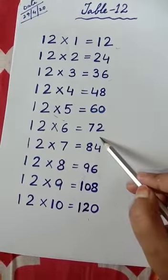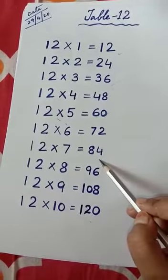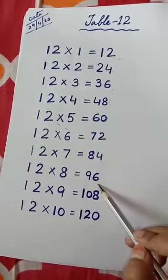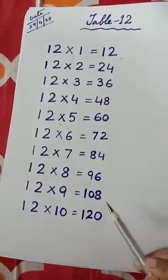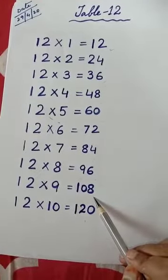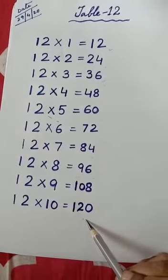12 sixes are 72, 12 sevens are 84, 12 eights are 96, 12 nines are 108, 12 tens are 120.